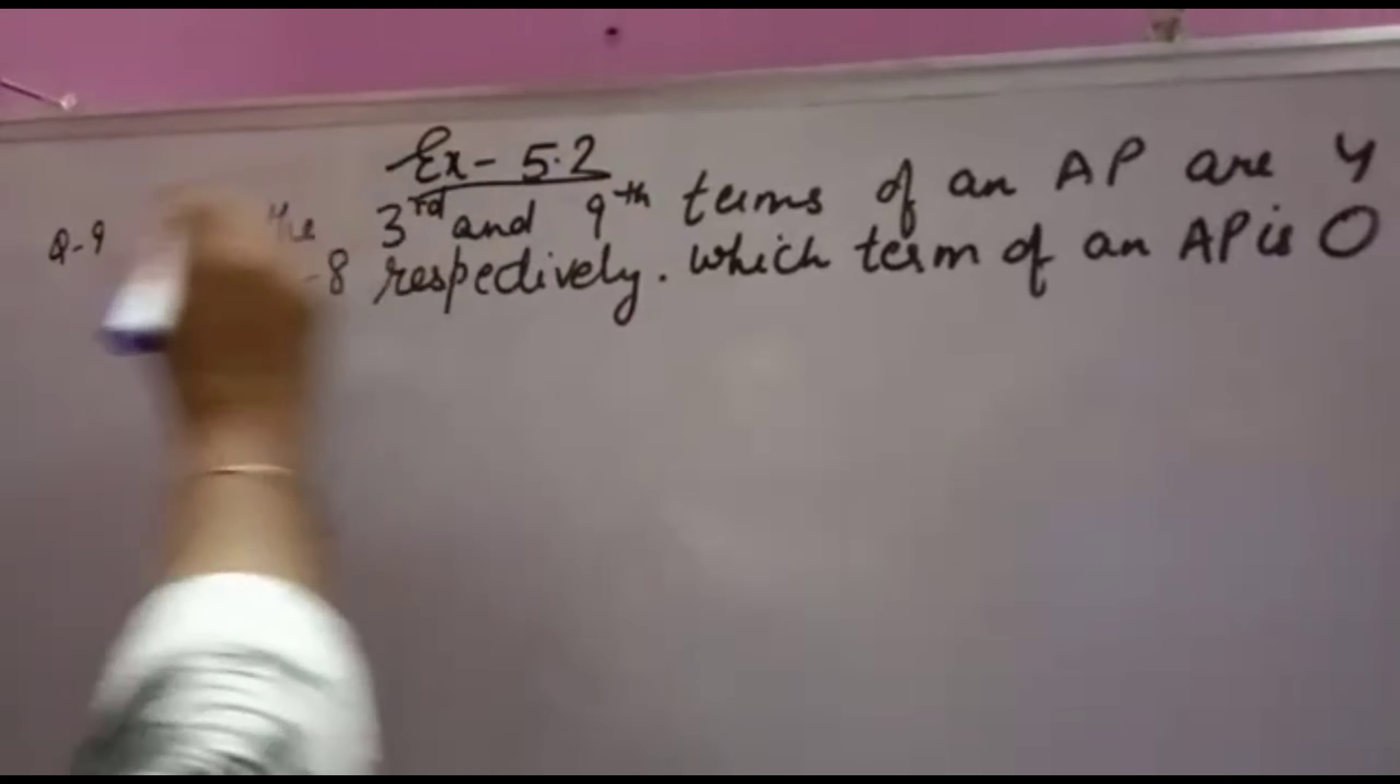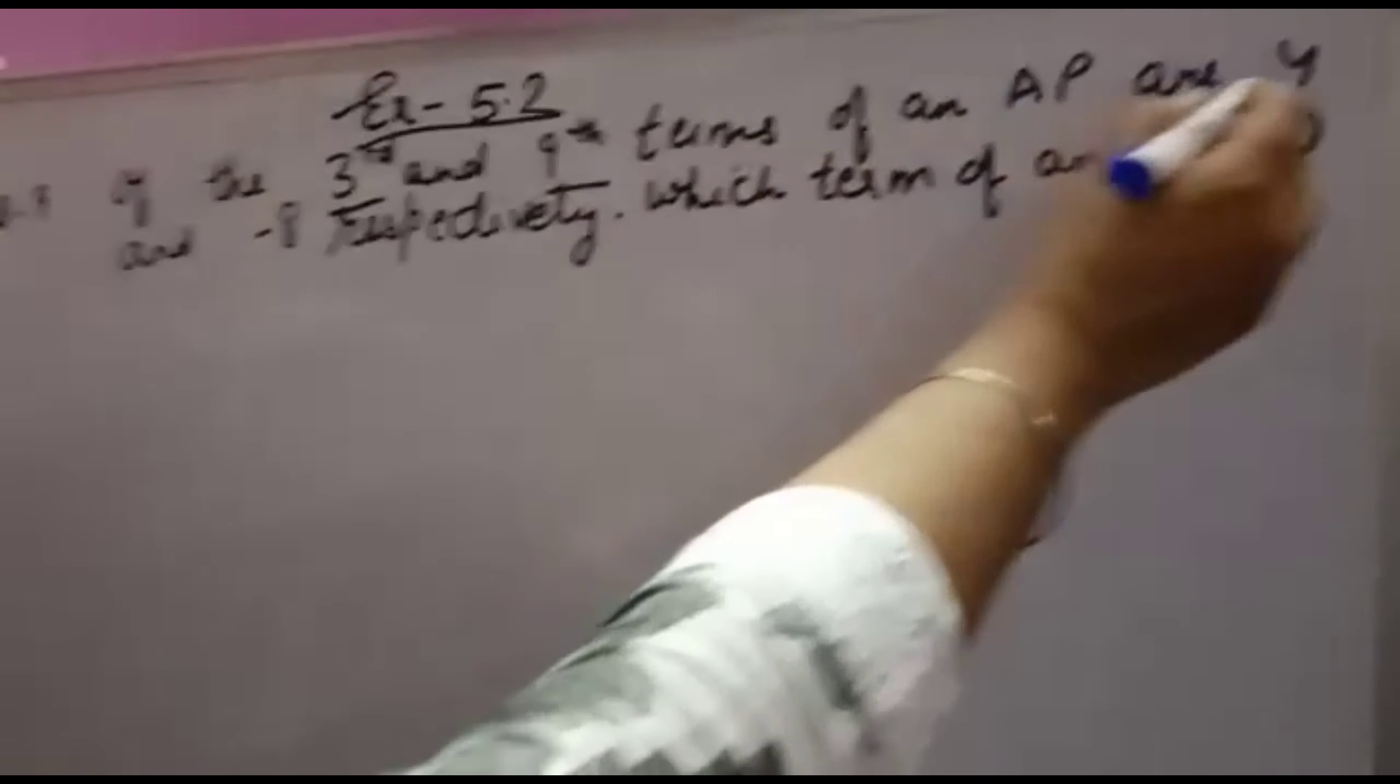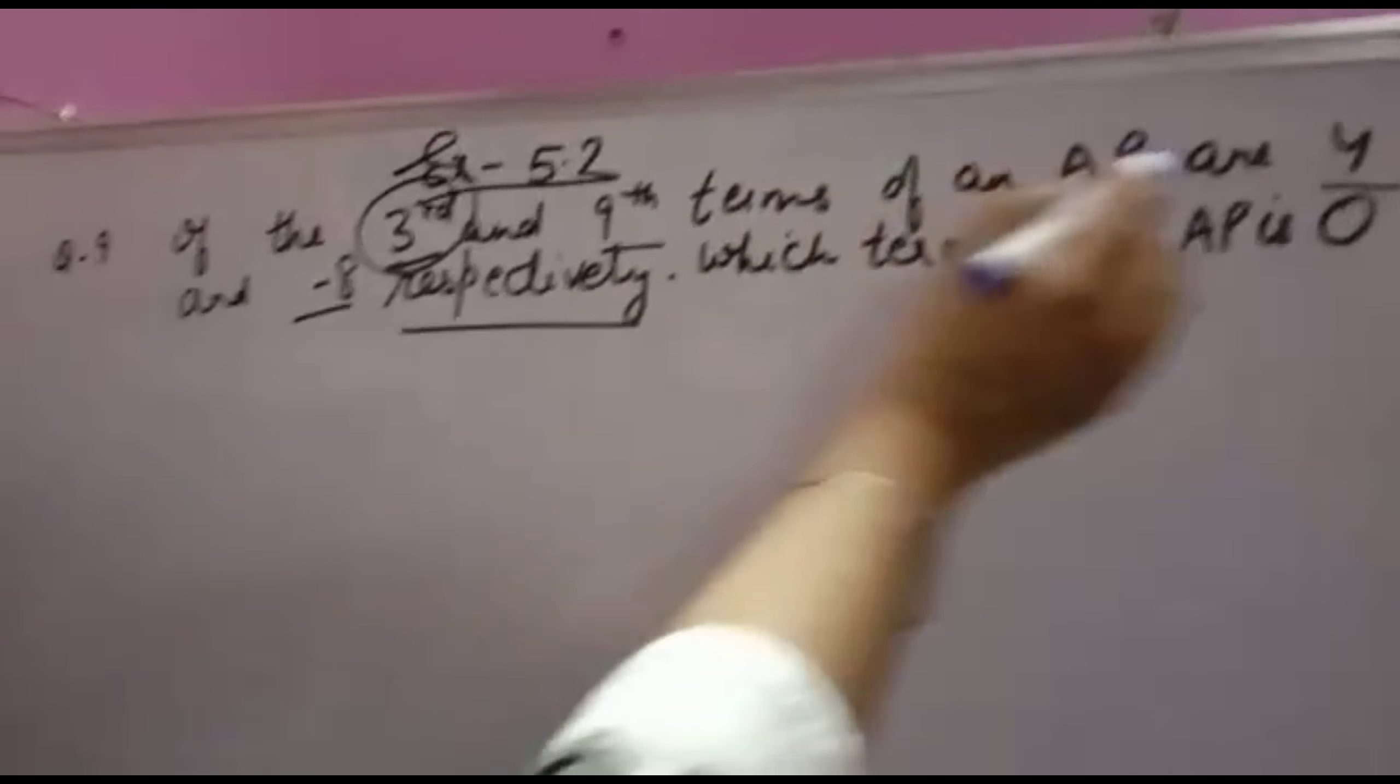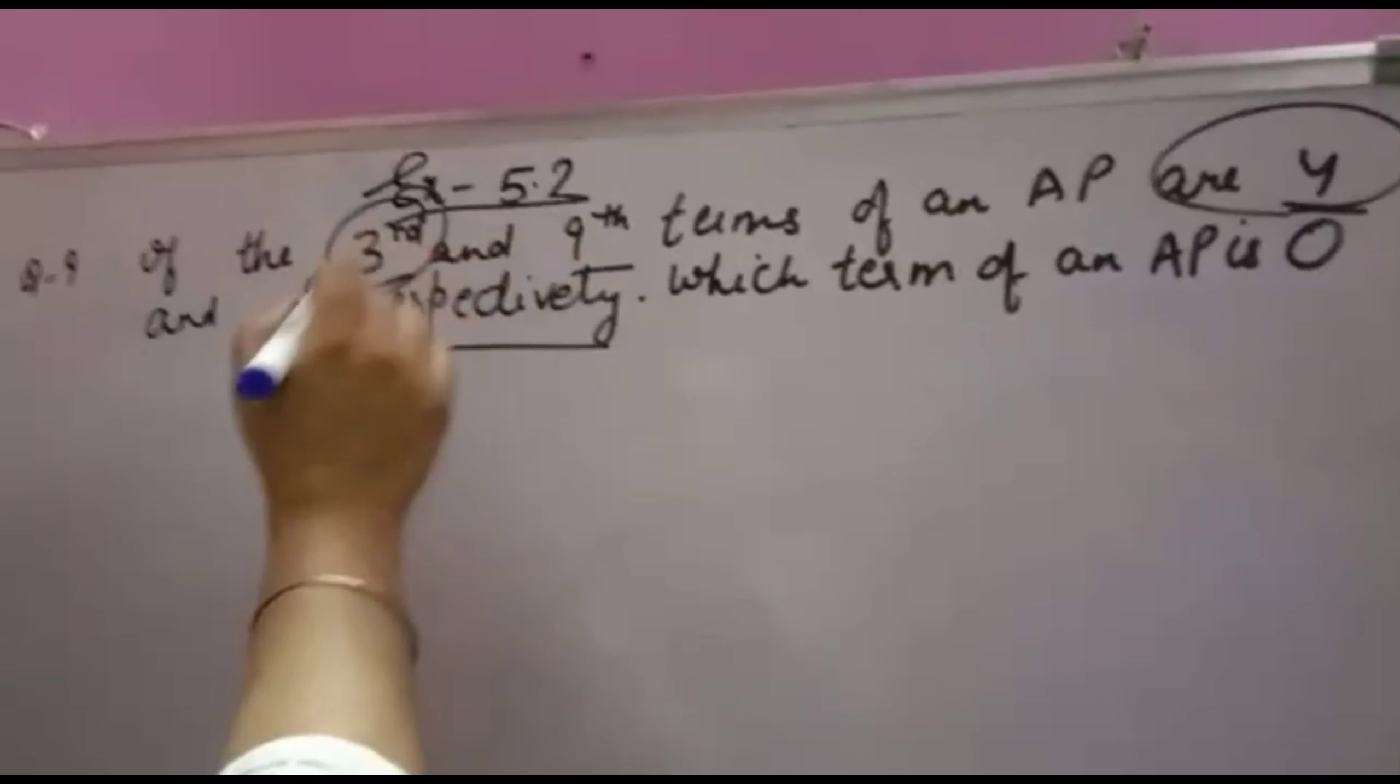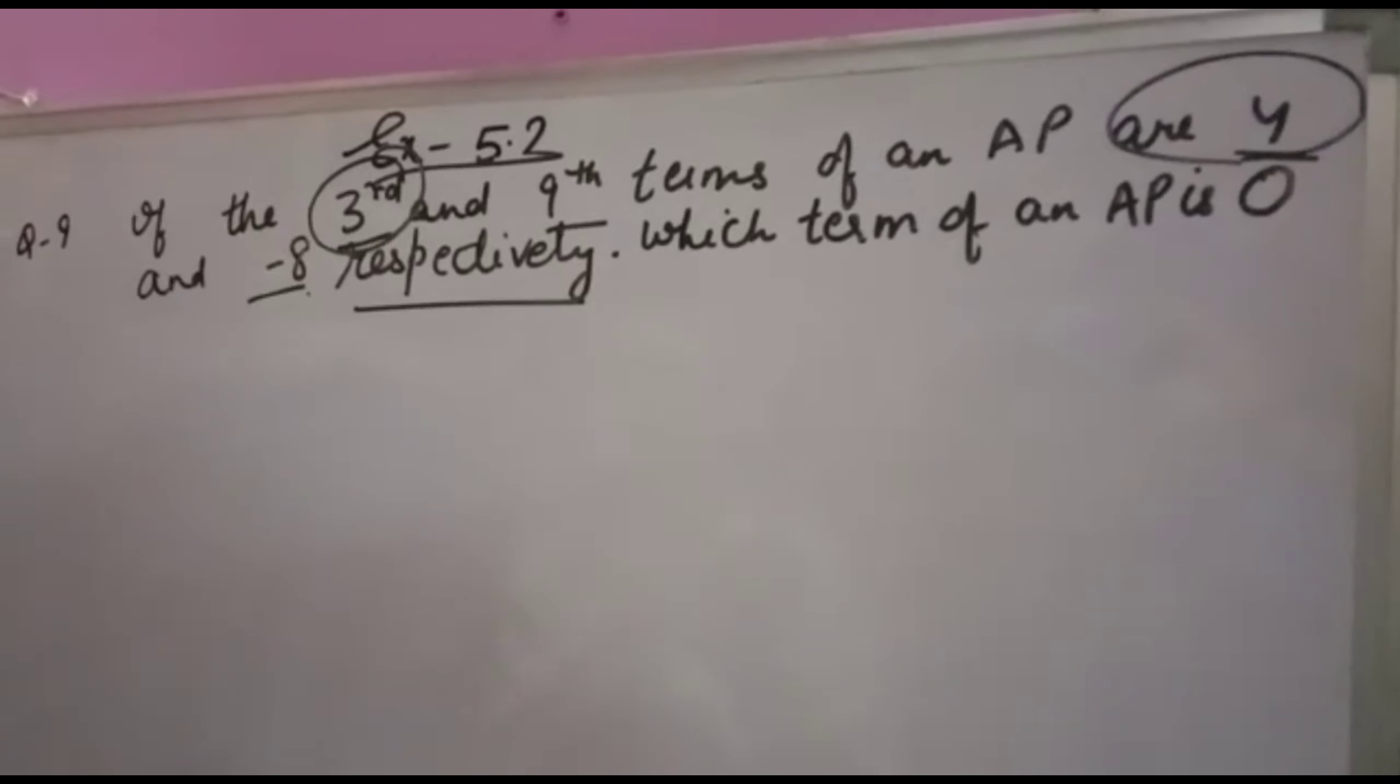I am going to solve question number 9. If the 3rd and 9th terms of an AP are 4 and -8 respectively, which term of this AP is 0? This is a very important question.